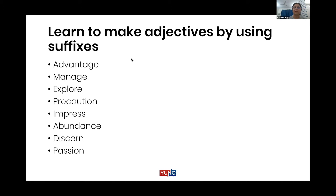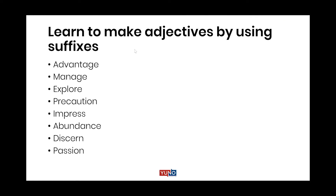Prabhjit, go ahead, please explain. So a suffix is something that will come after the word — after something. So I was saying there are two types: suffix and prefix. Suffix is something which will come after the word, and prefix is before that — some letters that are added.